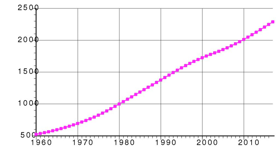Ethnic groups: Tswana or Setswana 79%, Kalanga 11%, Basarwa 3%, other 7% including Kgalagadi and White.